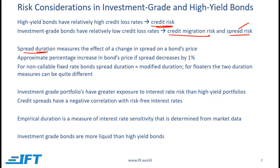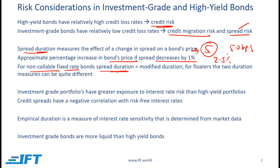Approximately speaking, spread duration is the percentage increase in a bond's price if the spread decreases by 1%. So let's say that for a given bond the spread duration is 5 and the spread decreases by 50 basis points or half a percent — the bond's price will go up by 2.5%, which is half of 5. For non-callable fixed rate bonds, spread duration will be roughly equal to modified duration, but for floaters and other types of bonds with embedded options, the two spread measures can be quite different.